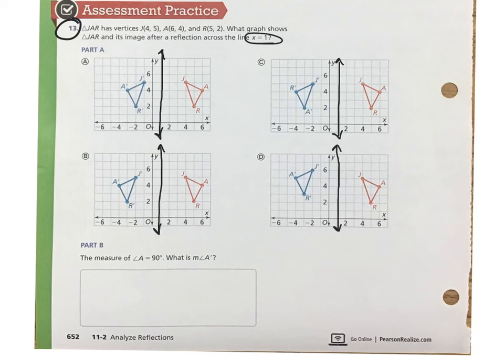Choice B is the correct graph. You'll notice in this graph, points J and J prime are each three units away from that line of reflection. Points R and R prime are each four units away from that line of reflection. And points A and A prime are five units away from that line of reflection.